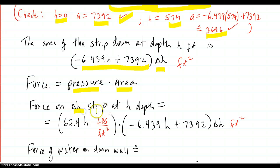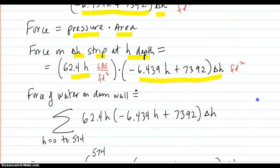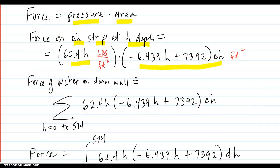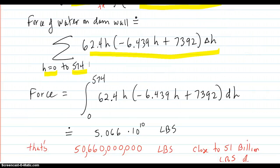So the force on the delta h strip at depth h is 62.4h pounds per square foot, that's the pressure, and this is the area right here in square feet. So the force of the water on the total wall is h going from zero to 574 of your pressure times your area. And then of course as the delta h goes down to zero, your total force on the entire wall is going to be this integral right here.